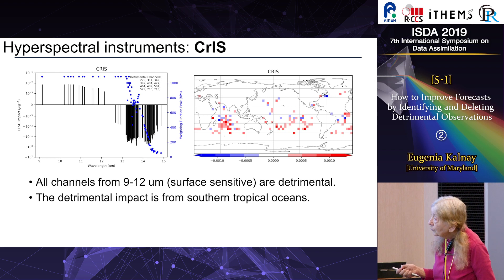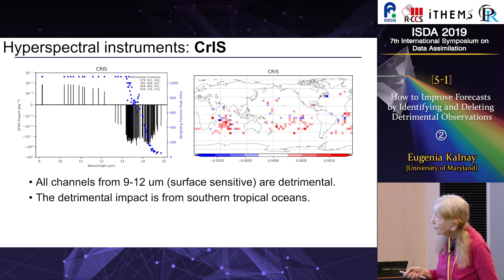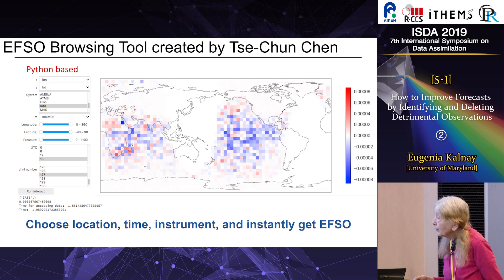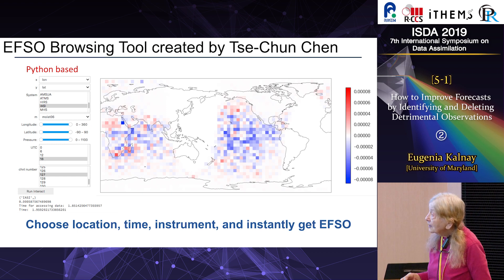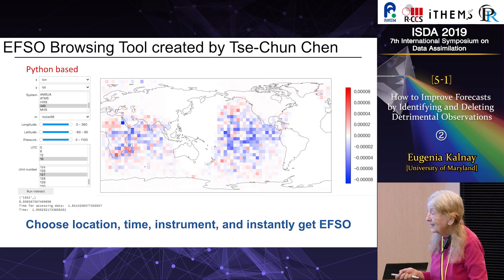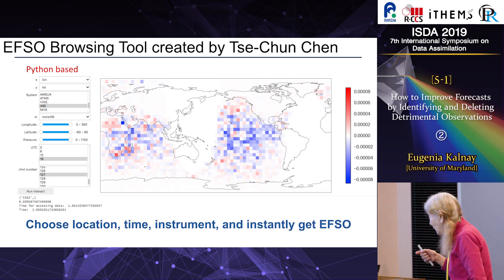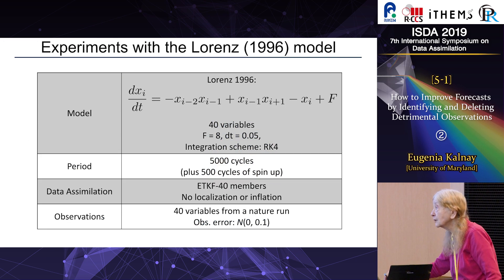CrIS has many beneficial channels but also a number of detrimental ones, which are again surface channels. I would like to point out that you can look for the EFSO browsing tool — you just choose the location, time, and instrument and instantly get the EFSO result. This would be very helpful to developers and users choosing beneficial channels.